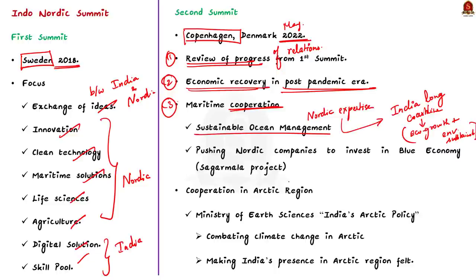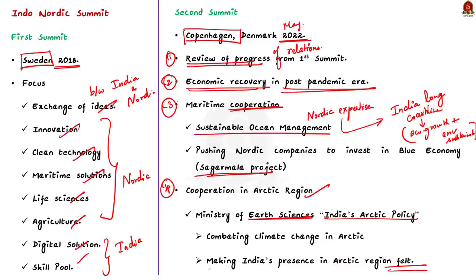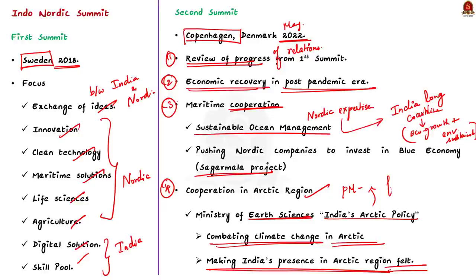Fourth, there was discussion regarding cooperation in the Arctic region. India's Ministry of Earth Sciences unveiled India's Arctic Policy, aiming to make India's presence felt in the resource-rich Arctic region and to counter climate change there. The Prime Minister mentioned that India's Arctic policy provides a good framework for expansion of India-Nordic cooperation in the Arctic region.